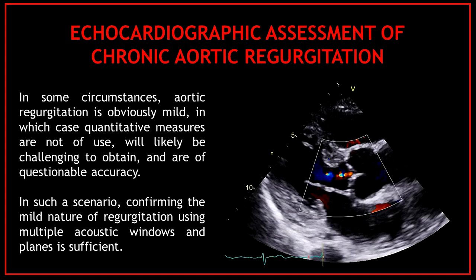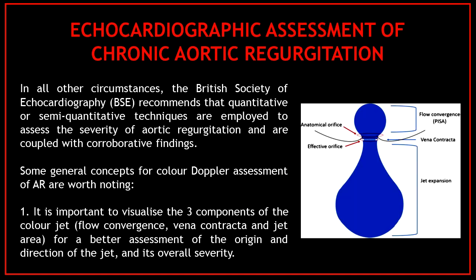Now let's talk about the echocardiographic assessment of chronic aortic regurgitation. In some circumstances aortic regurgitation is obviously mild, in which case quantitative measures are not of use, will likely be challenging to obtain, and are of questionable accuracy. In such a scenario, confirming the mild nature using multiple acoustic windows and planes is sufficient. In all other circumstances, the British Society of Echocardiography recommends that quantitative or semi-quantitative techniques are employed and coupled with corroborative findings.